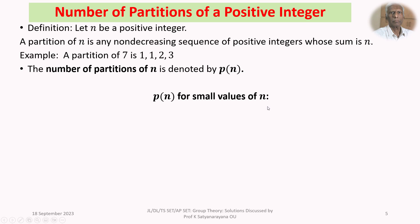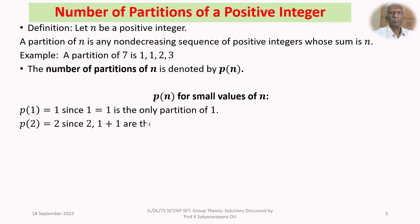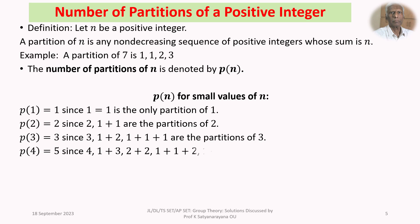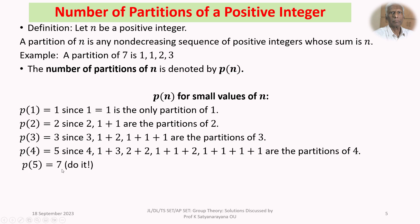For N = 1, it can only be written as 1, so P(1) = 1. For N = 2: 1+1 and 2, so P(2) = 2. For N = 3: 1+1+1, 1+2, and 3, so P(3) = 3. For N = 4, there are 5 partitions: 1+1+1+1, 1+1+2, 2+2, 1+3, and 4. So P(4) = 5. P(5) = 7 and P(6) = 11 — do those yourself. Remembering these values is an advantage.